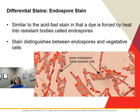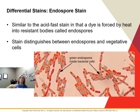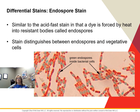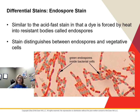The endospore stain is similar to the acid-fast stain in that dye is forced by heat into bodies called endospores that normally won't stain. This distinguishes endospores from vegetative cells — vegetative means metabolically active. This stain is important in identifying gram-positive spore-forming members of Bacillus and Clostridium, helping determine virulence and species identification.